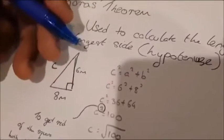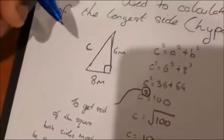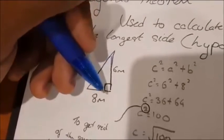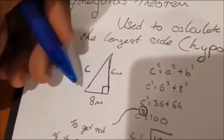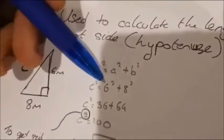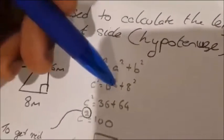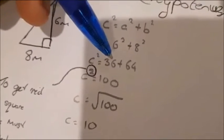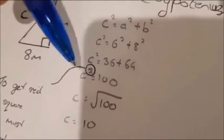Say for this example, c is the hypotenuse, 6 metres is your height, and 8 is your base. Then it's c squared equals 6 squared plus 8 squared. c squared equals 36 plus 64, which equals 100.